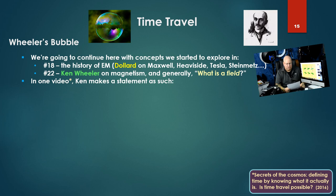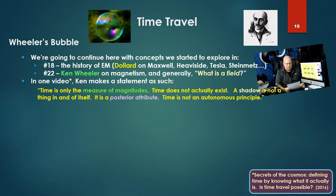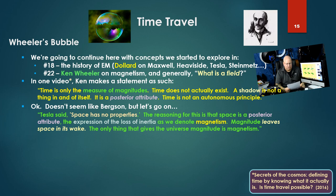We're going to continue here with concepts we started to explore in number 18 in the history of electromagnetism with Eric Dollard, Maxwell, Heaviside, Tesla, Steinmetz, followed by number 22 with Ken Wheeler on magnetism and generally the notion, what is a field? In one video, Ken makes a statement as such. Time is only the measure of magnitudes. Time does not actually exist. A shadow is not a thing in and of itself. By invocation, saying time is like a shadow, a posterior attribute. Time, like the shadow, is not an autonomous principle.